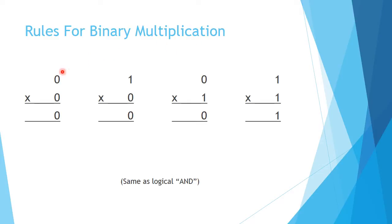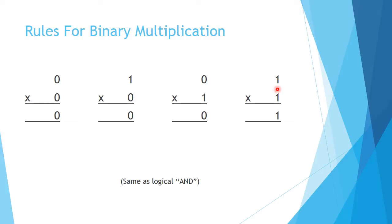The rules for binary multiplication are also pretty easy: 0 times 0 is 0, 1 times 0 is 0, 0 times 1 is 0, and it only gets interesting if we have 1 times 1, where the result is 1. It's also pretty interesting because this is the same as logical AND, where the output is 1 only when both inputs are 1.